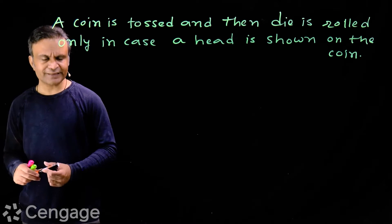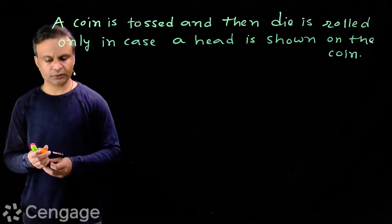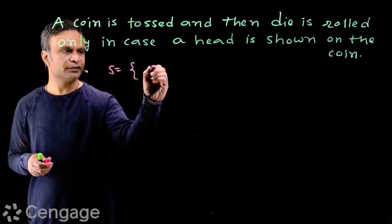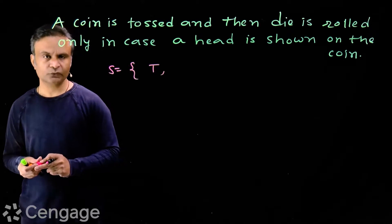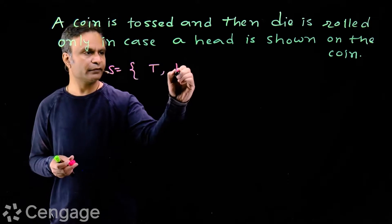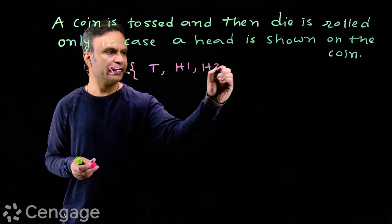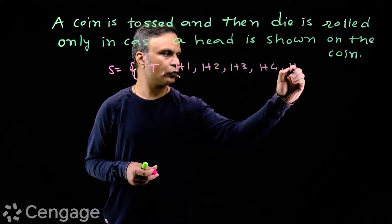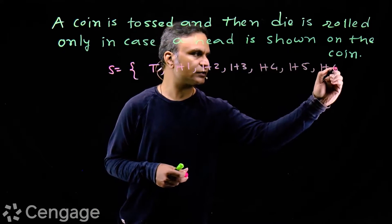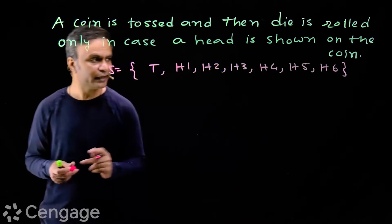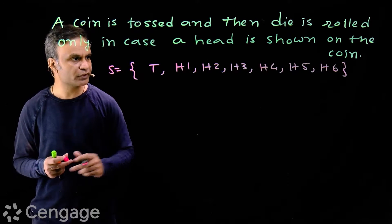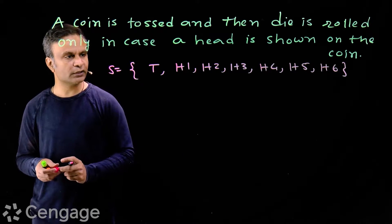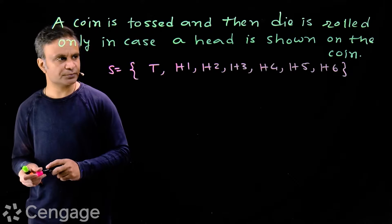First, let's write the sample space. The sample space has elements like this: T for tail, then we have H1, H2, H3, H4, H5, and H6. If there is head, we are rolling a die, so with H there will be 6 elements. So we have a total of 7 elements in the sample space.